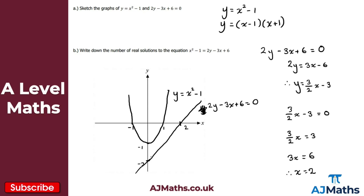For part B, we need to write down the number of real solutions to x squared minus 1 equals 2y minus 3x plus 6. Because they've been equated, we're looking for where they intersect. From our sketch, the quadratic and the straight line don't actually intersect, so there are no real solutions — no points of intersection. That's our solution to question 2 and the end of this video on points of intersection.